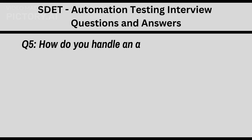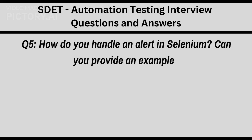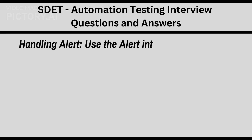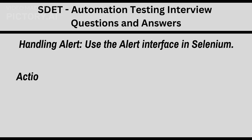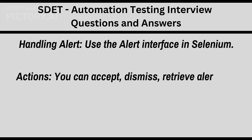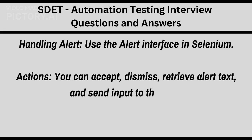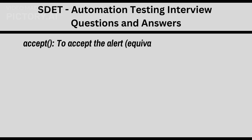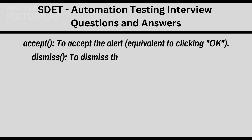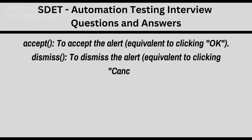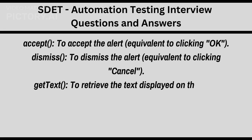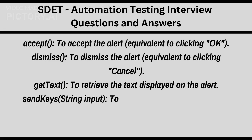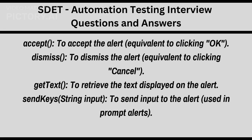Q5. How do you handle an alert in Selenium? Can you provide an example? Use the alert interface in Selenium. You can accept, dismiss, retrieve alert text, and send input to the alert. Use getText to retrieve the text displayed on the alert, and sendKeys with a string input to send input to the alert — used in prompt alerts.